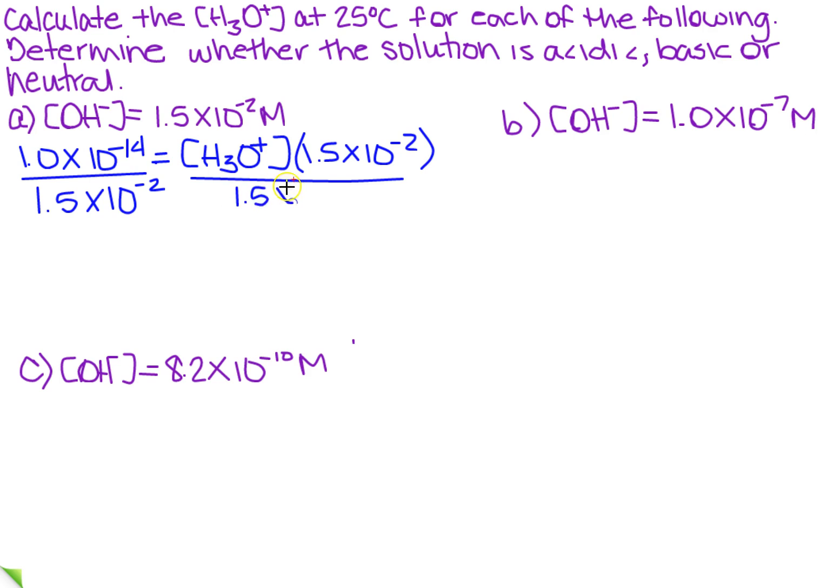Because remember, anything over itself is 1, so on the right-hand side, all that's going to leave me with is the hydronium ion concentration. So when I do that on my calculator, I get 6.7 times 10 to the minus 13. Remember, I wanted two significant figures. That's why it's 6.7.